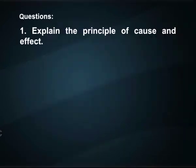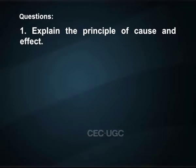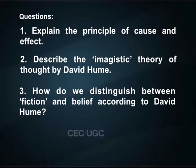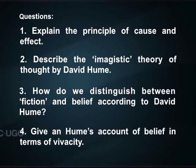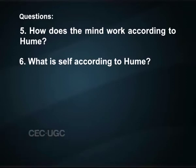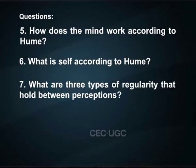Now you can try to answer the questions given here. First, explain the principle of cause and effect. Second, describe the imagistic theory of thought by David Hume. Third, how do we distinguish between fiction and belief according to David Hume? Fourth, given Hume's account of belief in terms of vivacity, how does the mind work according to Hume? What is the self according to Hume? What are the three types of regularity that hold between perceptions?